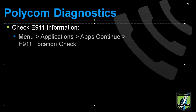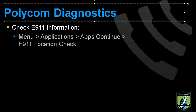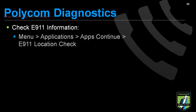One other thing that may be useful, especially if you're moving your phone around or taking it to other locations, is to check the E911 information. This can be done in WebLink, but it can also be done on the phone. Hit the menu button, select Applications, select Apps Continue, and then choose E911 Location Check. It will tell you where the phone is registered for the 911 service in the event that you need to call emergency services. It's important to make sure the phone is located at the location that is set up in the E911.